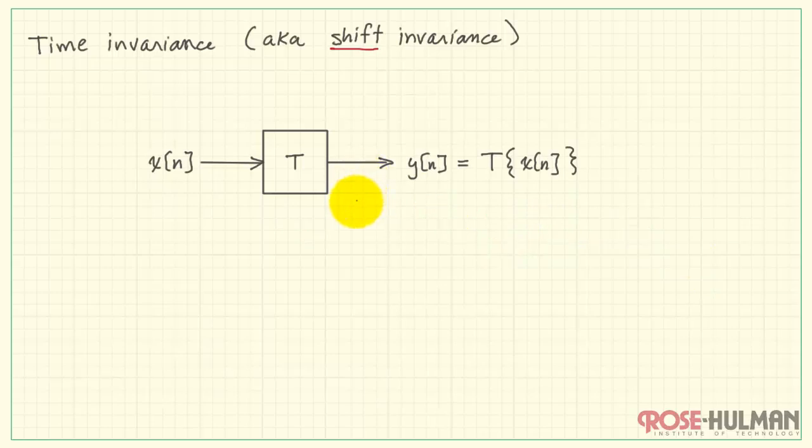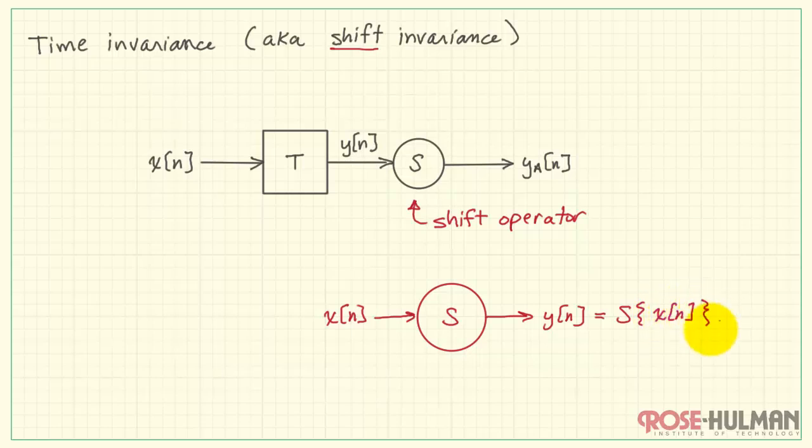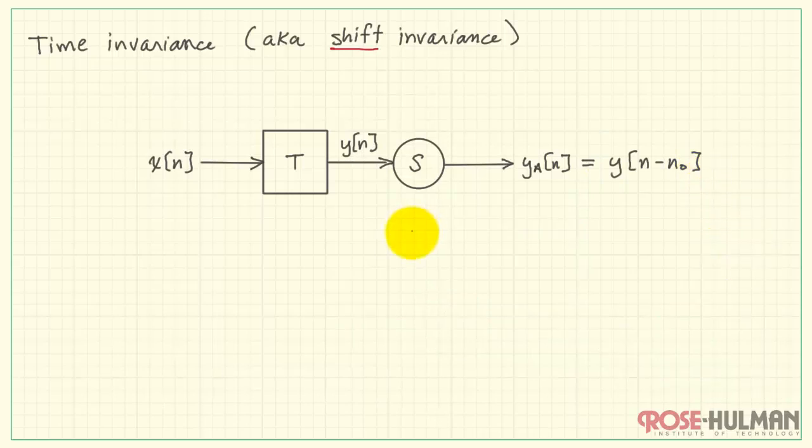Now to look at whether or not the system has the property called time invariance, let me begin by adding a shift operator on the output side of the system T. Say T forms Y of N, it passes through the shift operator, and that will then give us the modified output that I'll call Y sub A of N. Let's consider this shift operator S operating on an input X to produce an output Y. The shift operator delays the input by an amount N-naught. So it simply delays the input. Therefore, Y of N to produce Y sub A is Y of N minus N-naught, the delayed version of the output Y.